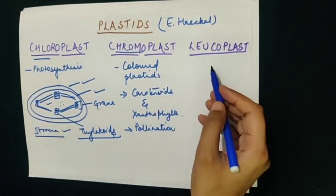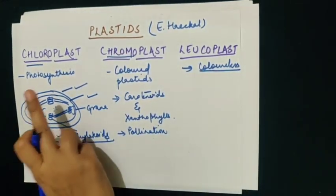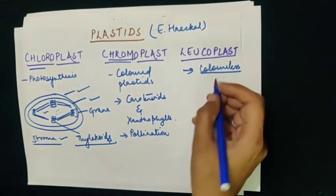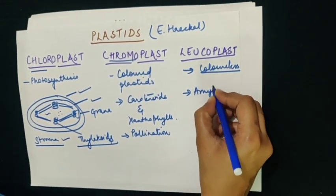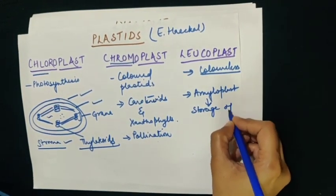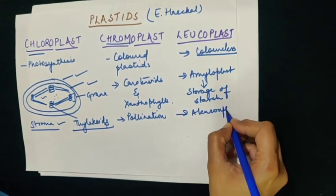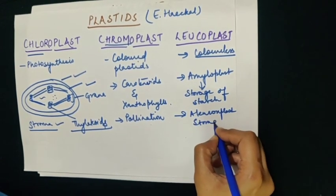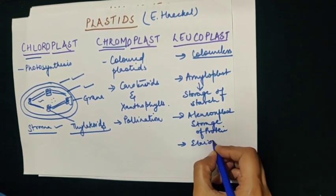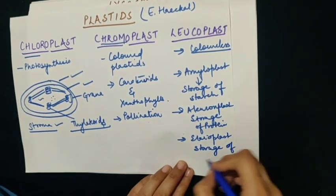Moving to the third category of plastids, which is leucoplast. Leucoplasts are colorless plastids. They are divided into three types: amyloplasts, which help in the storage of starch; aleuronplasts, which help in the storage of proteins in plants; and elaioplasts, which help in the storage of lipids in plants.